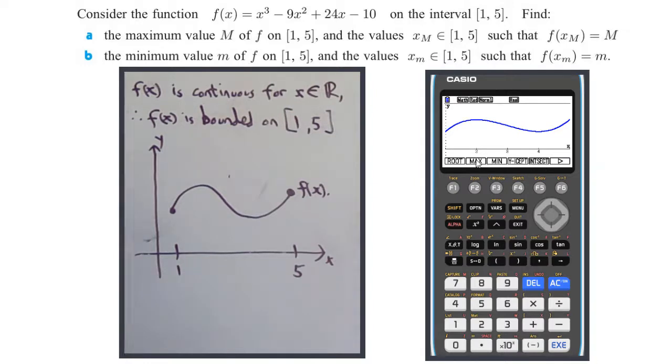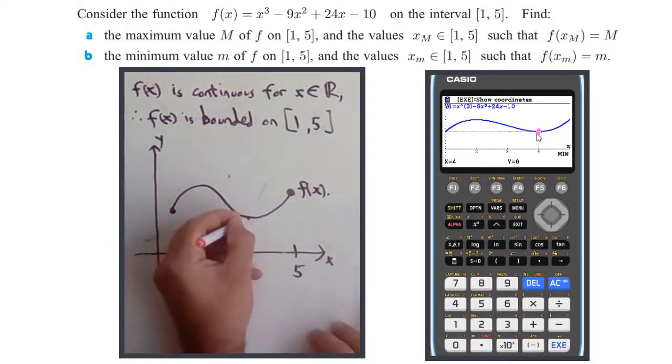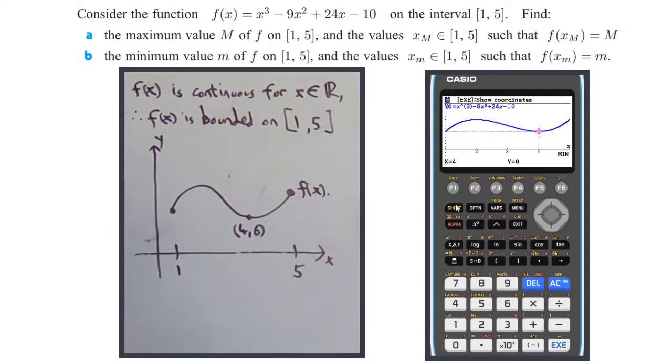So shift-G-solve, and look for the minimum. I've found this local minimum at the point (4, 6).